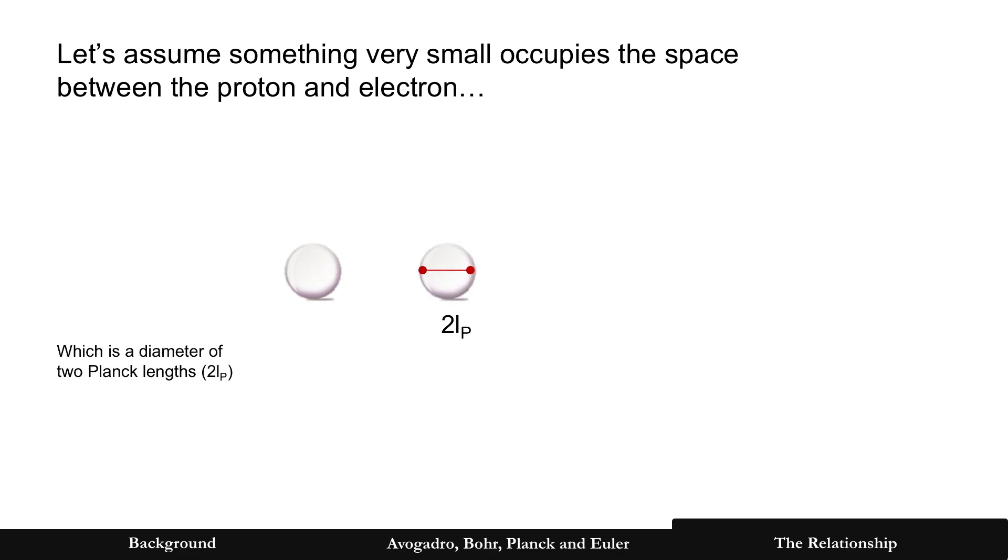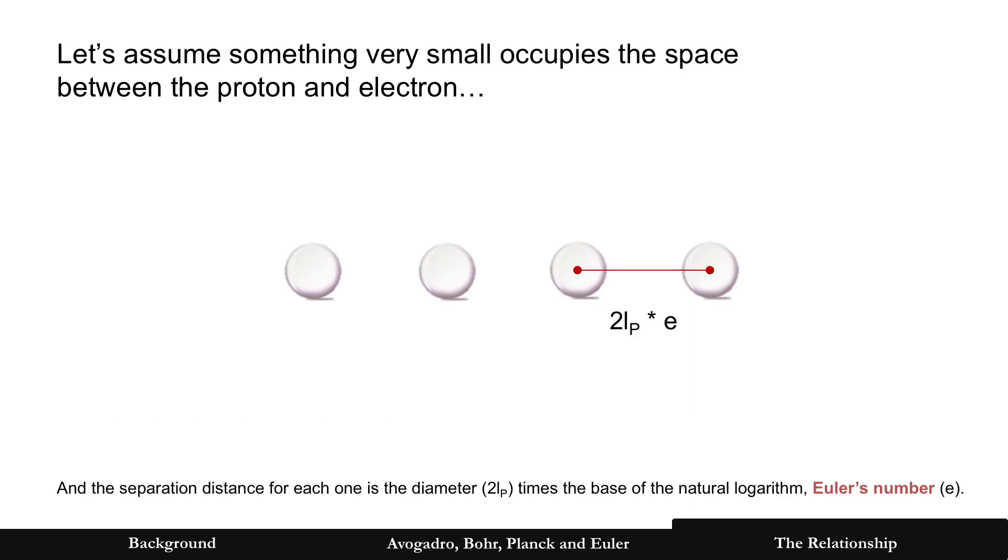All right, simple math here. What's that diameter? If it has a radius of Planck length, that's two Planck lengths, right? Two Lₚ. Now, let's also make another assumption here that if proton and the electron are communicating, that it takes something that travels and interacts as oscillations, which are waves. And so the last assumption here is let's assume a separation distance now is one diameter, that's two Lₚ, times the base of the natural logarithm. That's Euler's number.